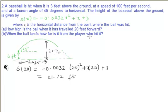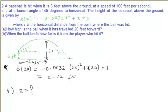When the ball lands, how far is it from the player who hit it? When the ball lands, this is the position where the ball lands. We need to calculate the horizontal distance, meaning we need to calculate x in this second case. For Part B, we need to calculate x because the height of the ball is 0 when it lands, so S(x) equals 0.